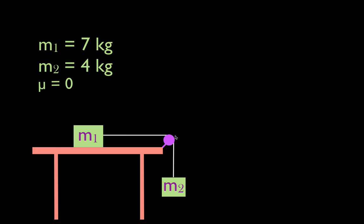We follow the string over the pulley down to m2. m2 has a mass of four kilograms. These two masses are attached by a massless inelastic string. The massless inelastic string passes over the massless frictionless pulley. All of that means we can basically ignore the mass of the string and the friction energy loss in the pulley when we release these two objects.